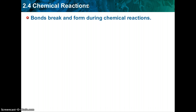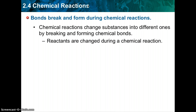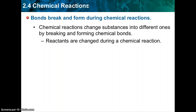Bonds break and form during chemical reactions. Chemical reactions change substances into different substances by breaking and forming chemical bonds. You have two parts: the reactants, which are changed during a chemical reaction and are found on the left side of a chemical equation, and the products, which are made or produced by the chemical reaction and are found on the right side.